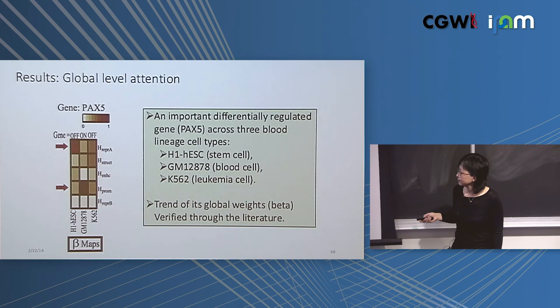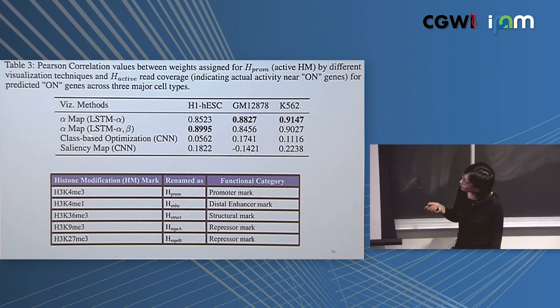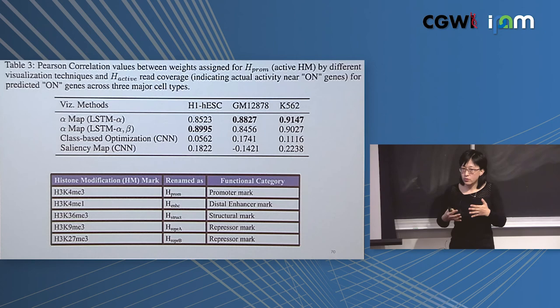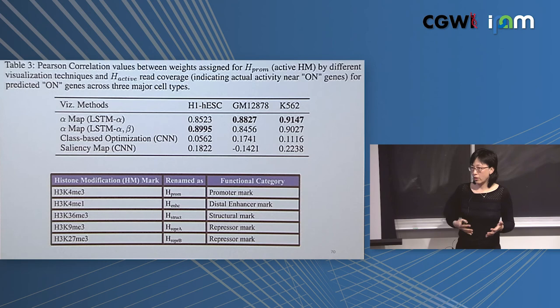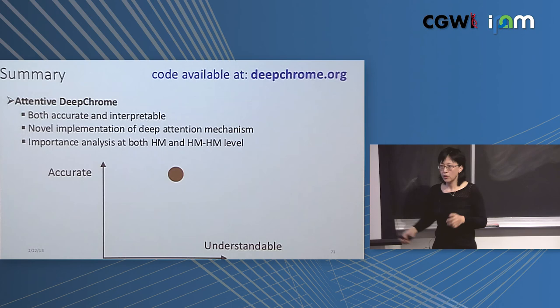We validated by taking attention weights across all genes and computing a mean summary. On genes, this matches expected patterns — for a gene that's off, the repressor histone mark gets high importance; when the gene switches to on, the promoter histone modification becomes important. We also compared pairwise Pearson correlation of learned attention weights to extra histone modification signals not used in training, and they match better than state-of-the-art post-processing approaches. All code is shared at deepchrome.org.